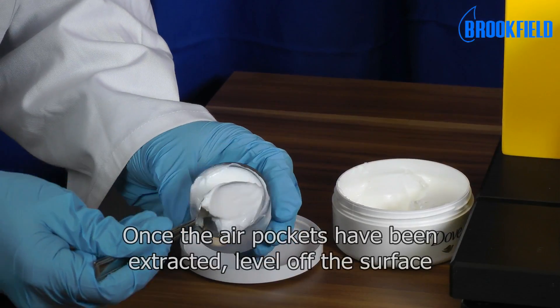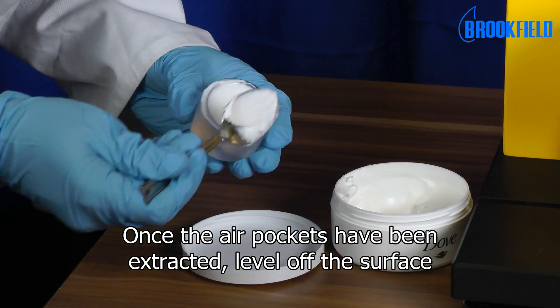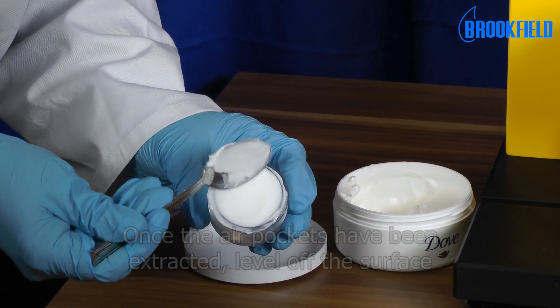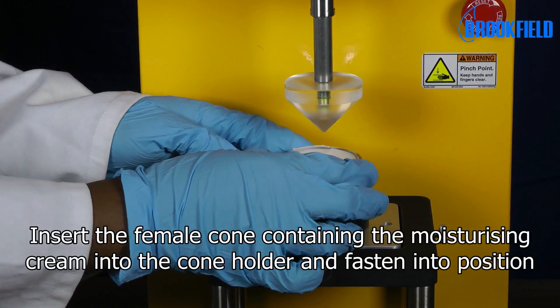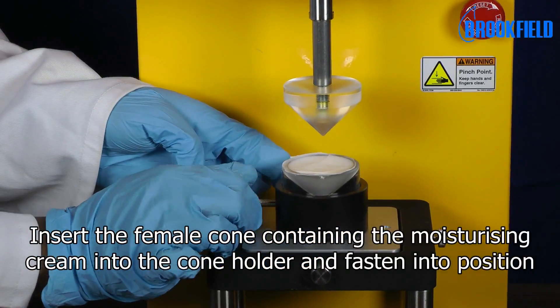Once the air pockets have been extracted, level off the surface. Insert the female cone containing the moisturizing cream into the cone holder and fasten into position.